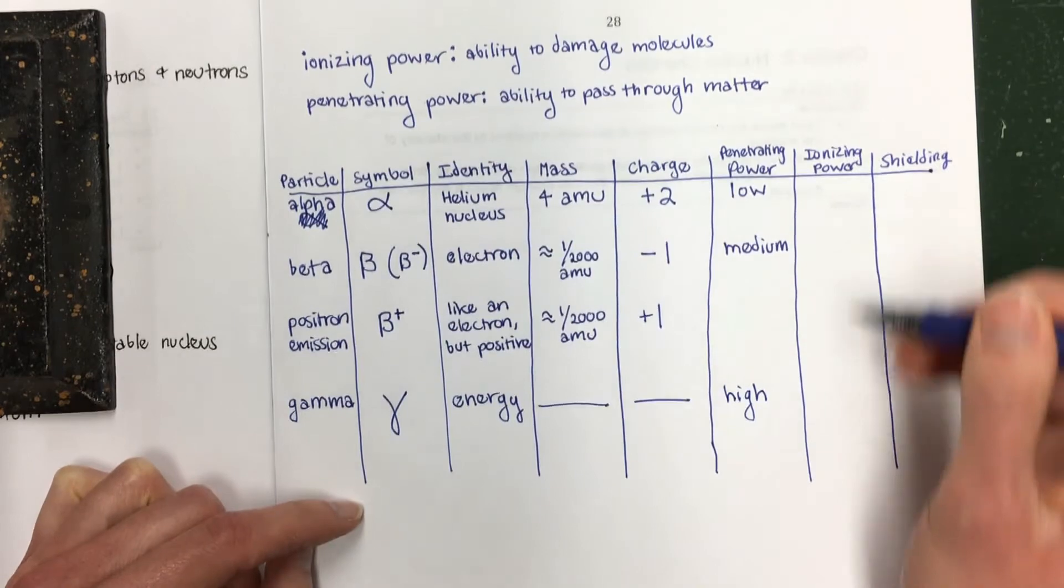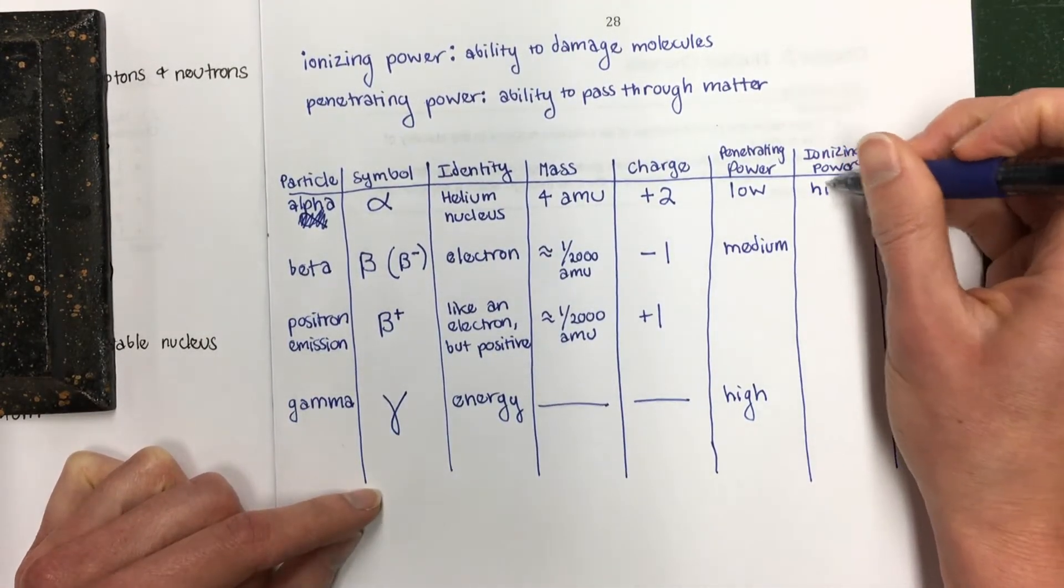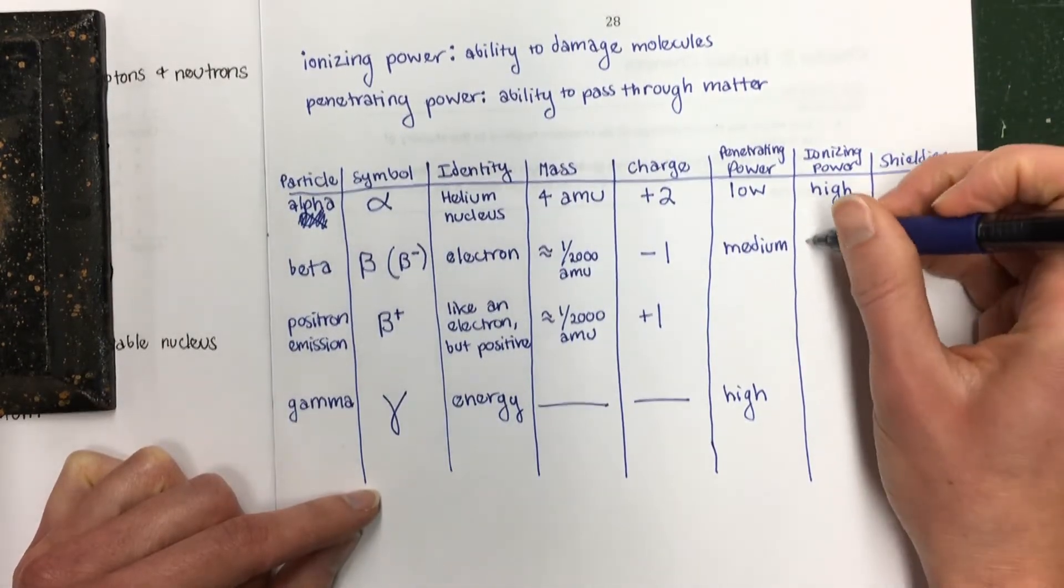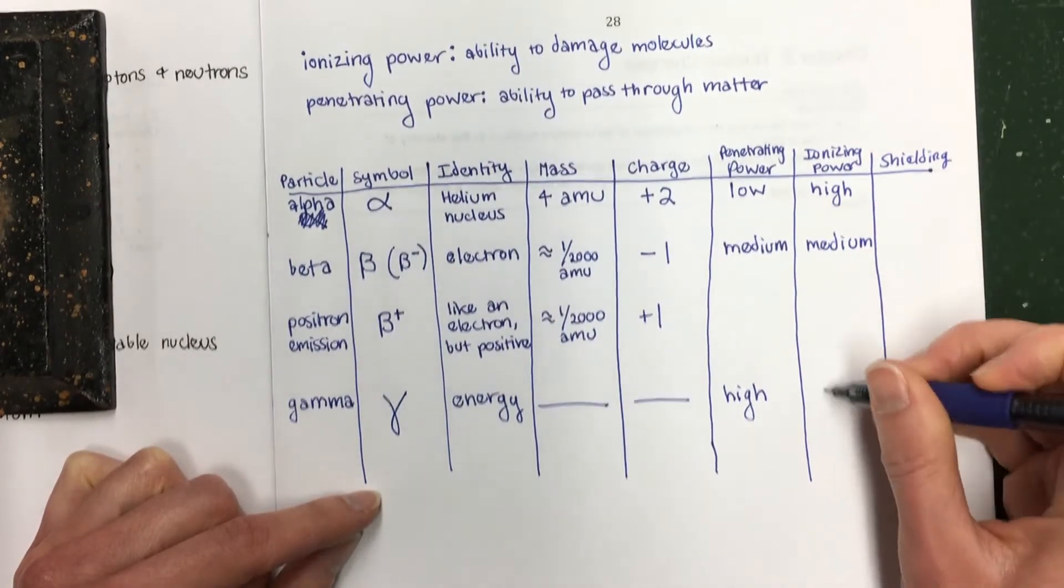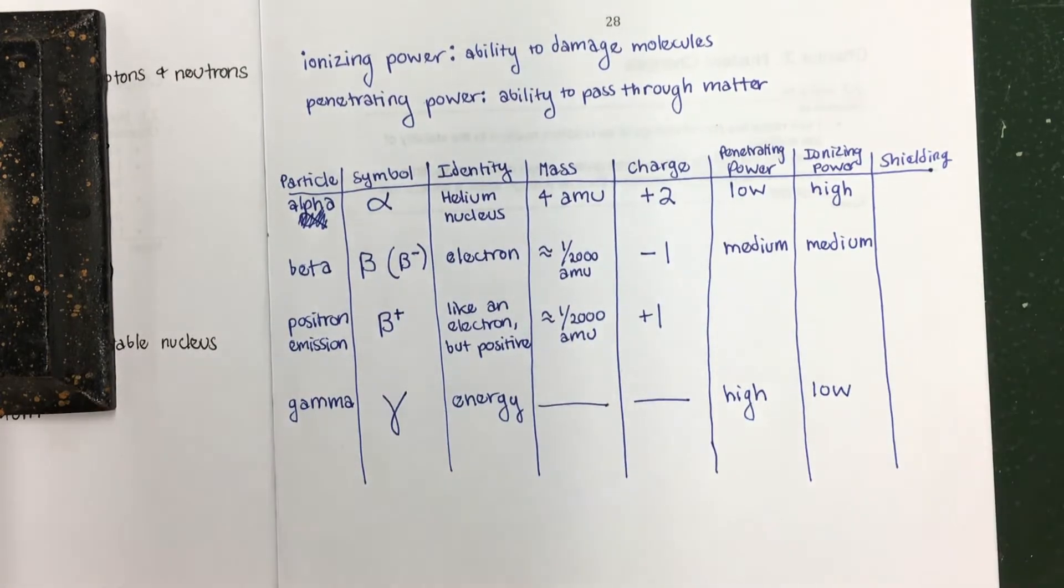Ionizing power. This is how much it can damage things like your cells. Alpha is very ionizing. It can be very damaging. So high ionizing power. Beta is kind of in the middle. And gamma is not as ionizing as these other types of radiation. But you still don't want to be exposed to it.